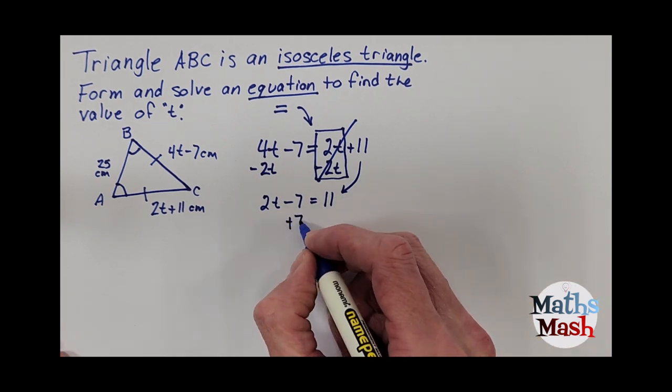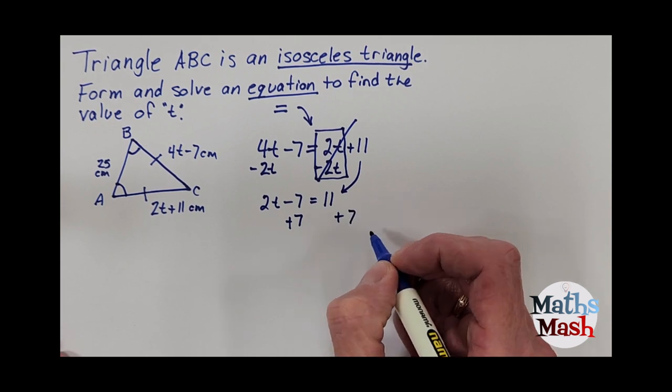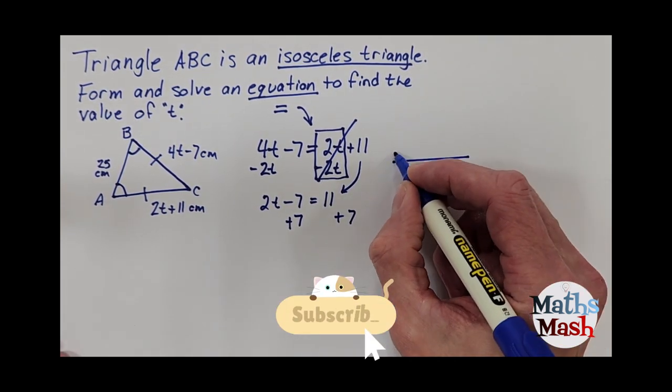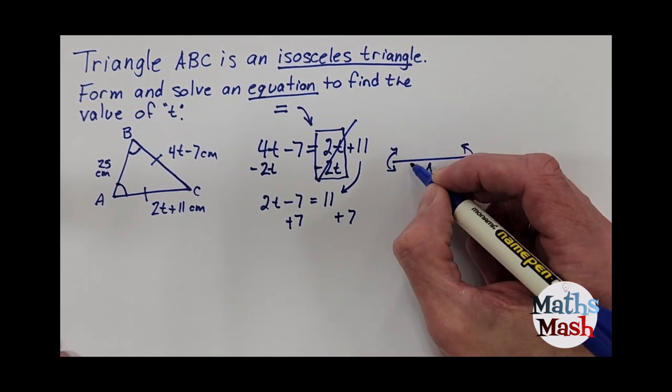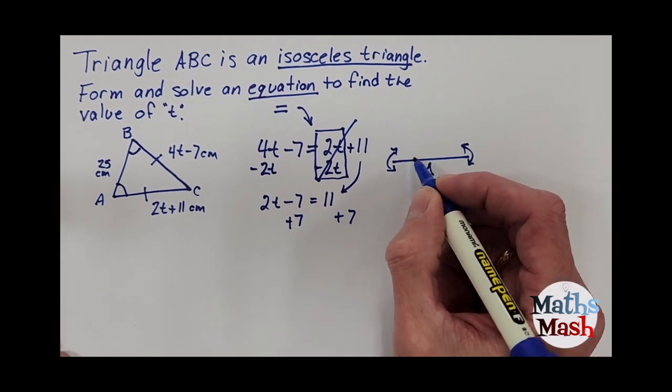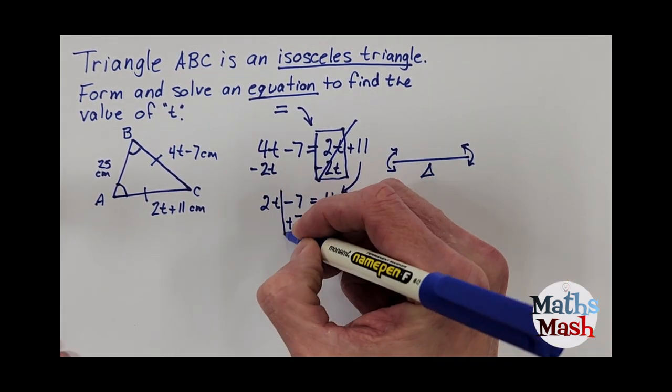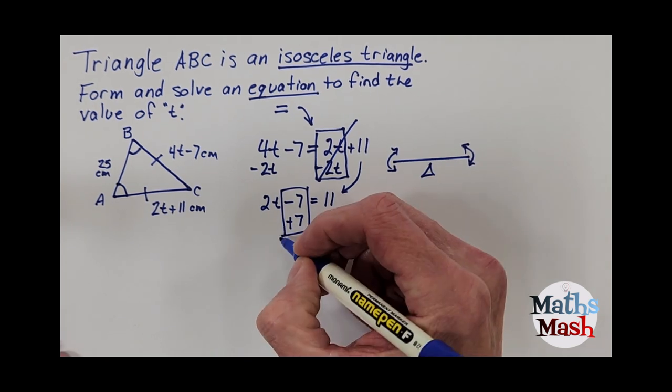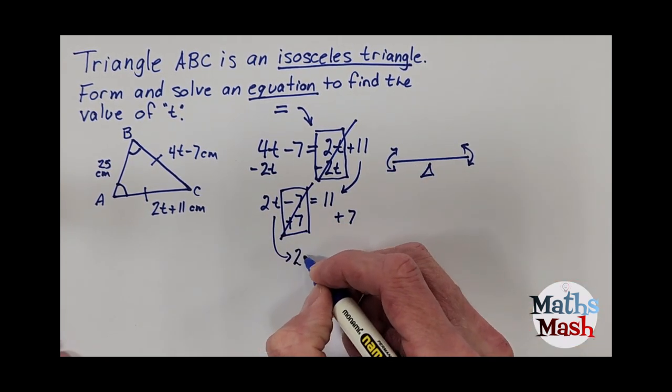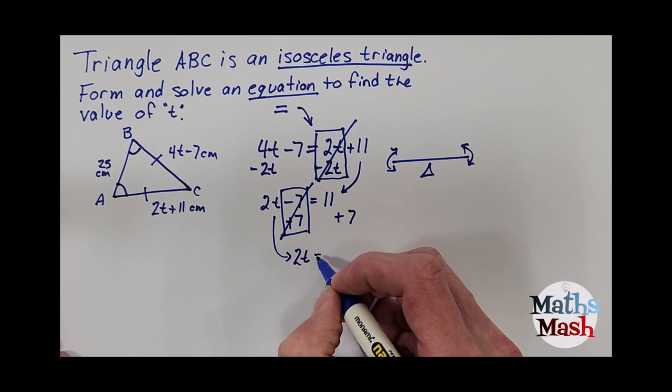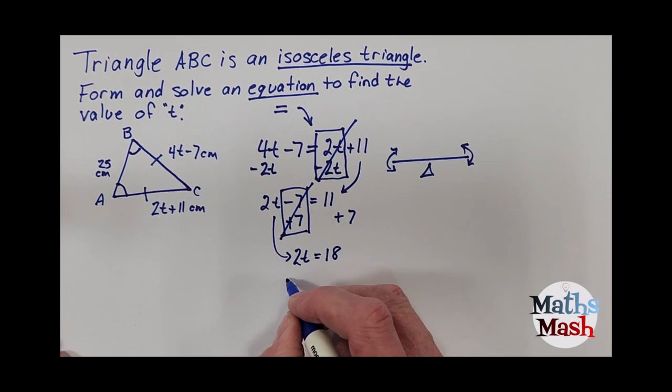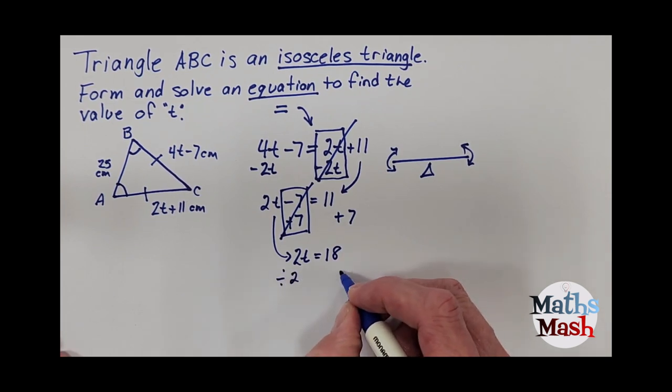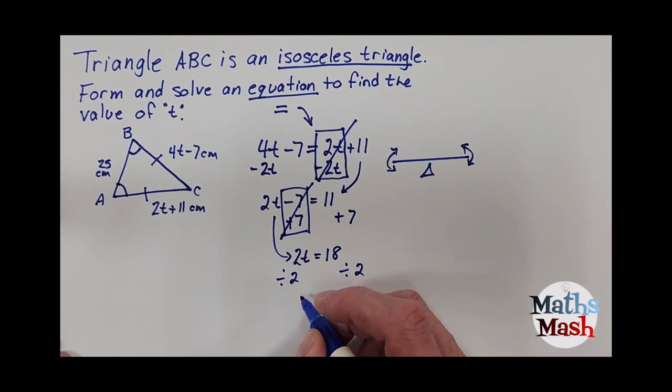Okay, so now I want to get rid of that negative 7. So I have to add 7 to both sides. Remember our balance. We're trying to keep both sides of the balance steady. Okay, whatever I do on one side I have to do to the other. So I'm adding 7 to both sides. So the negative 7 and the plus 7 cancel each other out and that leaves me with 2t equals 11 plus 7 is 18. So 11 plus 7 is 18. Okay, and now obviously I'm going to divide by 2 to get rid of the 2 and I do that to both sides again. That leaves me with t equals 18 divided by 2 is going to be 9.